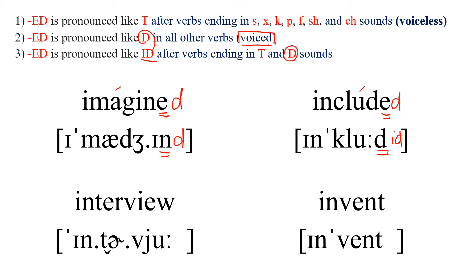Next one: INTERVIEW. Stress on the first syllable. This ends in a consonant, so we put ED. The ending is a vowel O sound, which is voiced. So we just use D and read: INTERVIEWED.